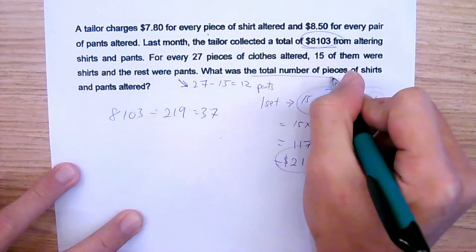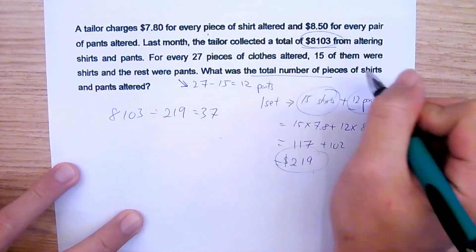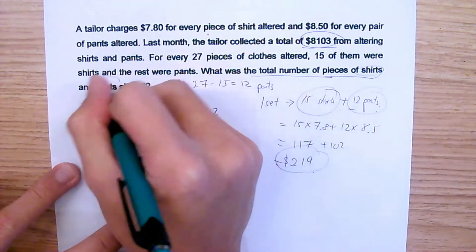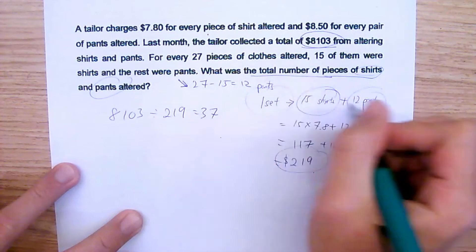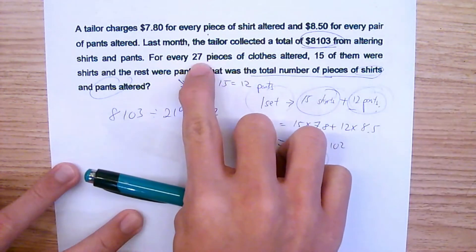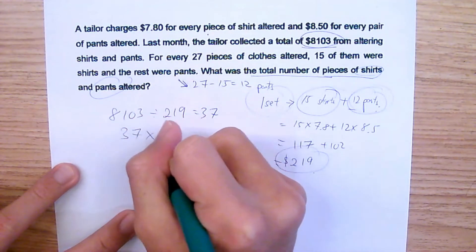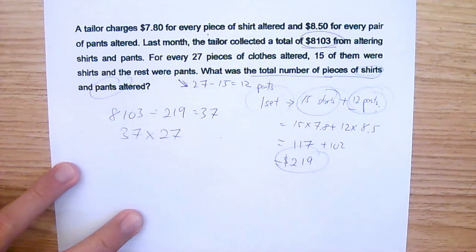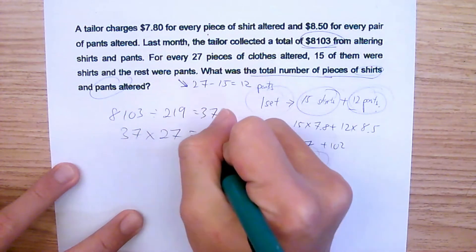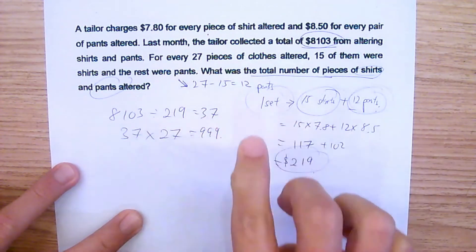Now the question is asking, what was the total number of pieces of shirts and pants altogether? In one set, there are 15 plus 12, which is 27. So I have 37 sets. So total, how many? 37 multiplied by 27. That will give me 999 pieces of clothes.